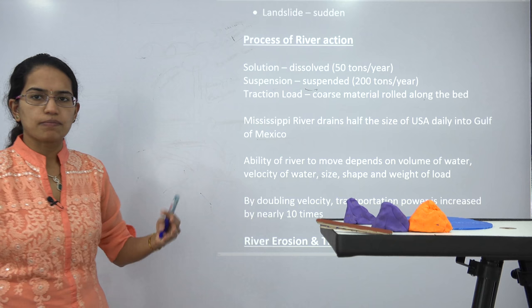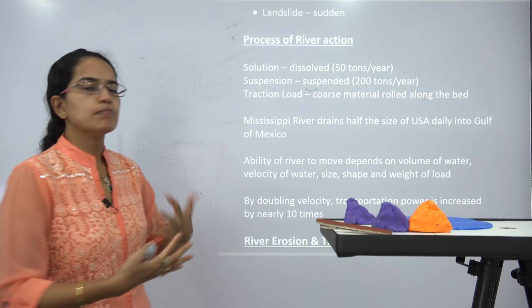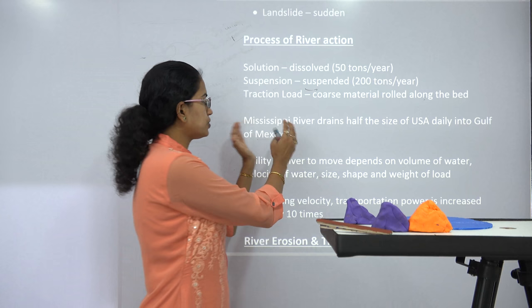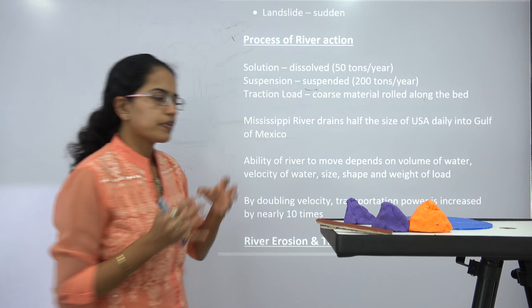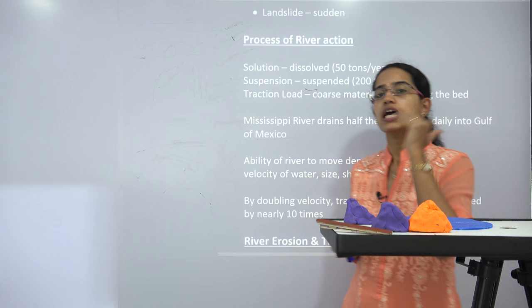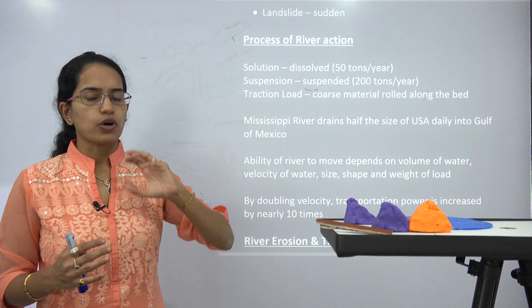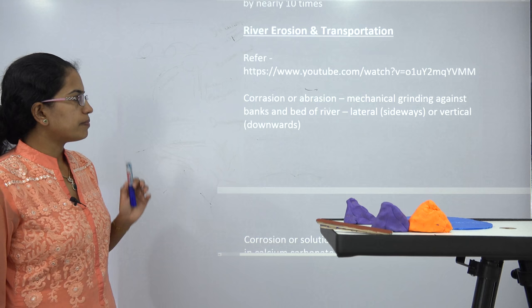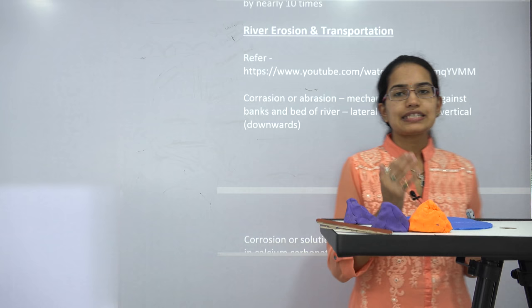The amount drained by the Mississippi varies greatly compared to other rivers, such as the Godavari in India. Each river flowing through its various stages has a different stream capacity, and therefore the formations these rivers make are different in each case. Now let's come to the basic idea of erosion and transportation.